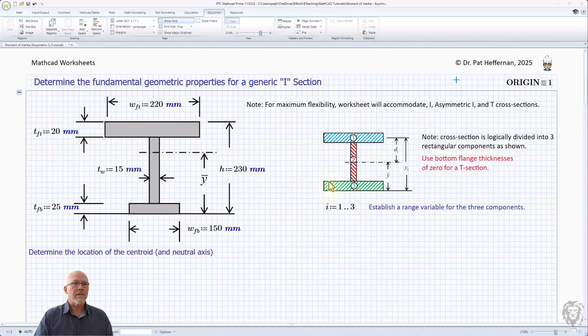I've got it laid out on the screen in the worksheet. I have a sort of generic beam laid out. Obviously if it was an I-beam, the bottom flange dimensions would be the same as the top flange. If it was a T-beam, then the thickness of the bottom flange would have to go to zero. We're going to break it up into logical sections: one being the top flange, two the web, three the bottom flange. We've already set up a range variable for i, which is going to align with components one, two, and three. I have set the origin equals one. That obviously matters when we're talking about range variables and arrays. We're going to be moving from index of one is the first one and then on up from there.